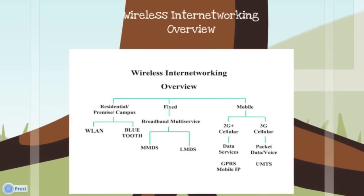The chart here shows a wireless internet networking overview. A communication device is classified into residential, fixed, and mobile. Under residential, we have WLAN and Bluetooth technology. Under fixed, for using broadband multi-services, we have MMDS and LMDS. For mobiles, there was 2G and 3G services and with the invent of 4G in the near future. In 2G, circuit data services use GPRS, while in 3G, packet data services use UMTS.